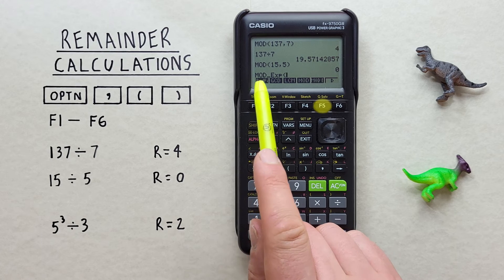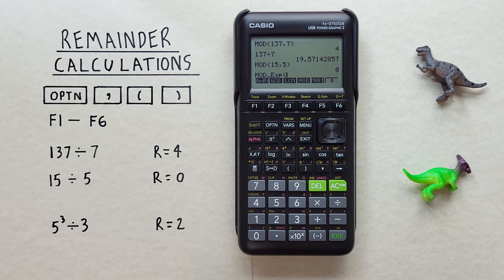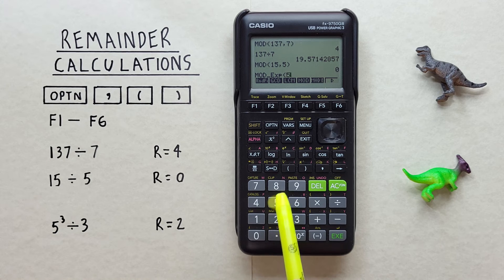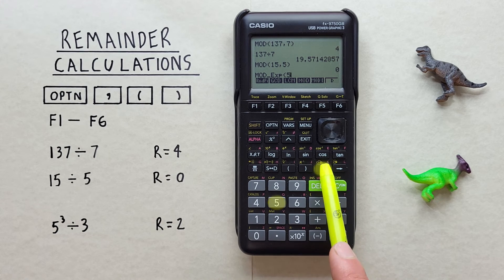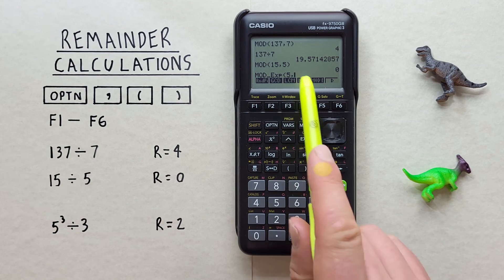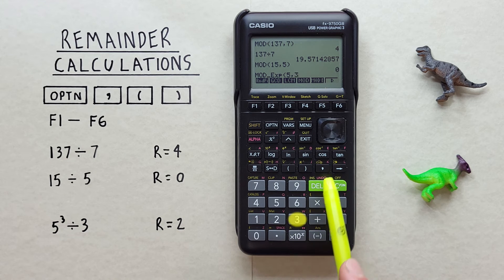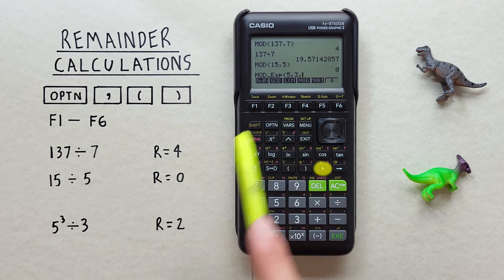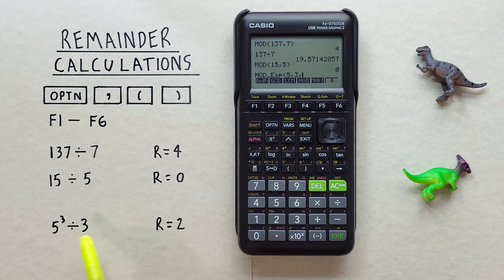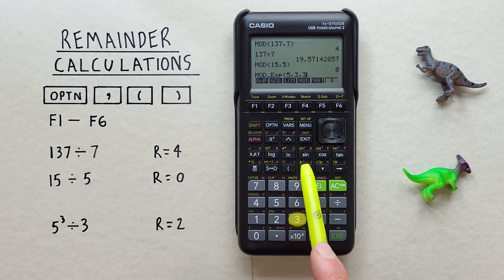There we go, mod exponential. And then we hit the first number, which was 5, comma. And then the next number will be the exponent, so that's 3, comma again. And then the last number, which was 3, and close our brackets.